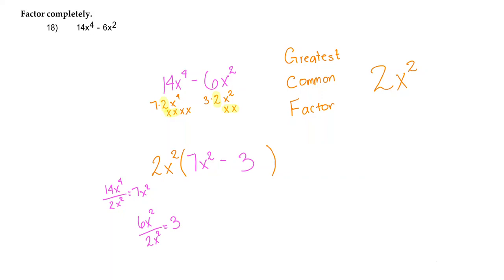So when we factor 14x to the 4th power minus 6x squared, the greatest common factor is 2x squared. So that is the largest value we can take out of the binomial. And when we take it out, we're left with 7x squared minus 3. So our answer is 2x squared times 7x squared minus 3.